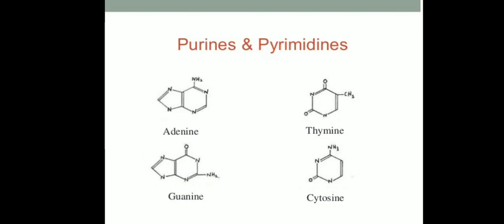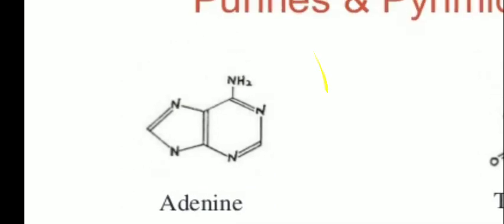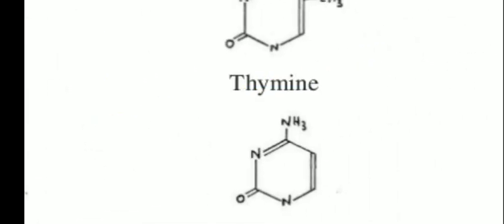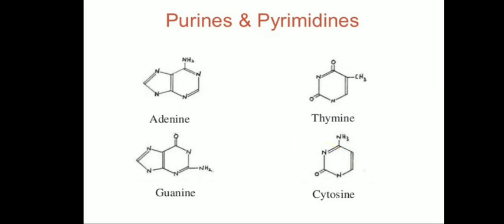Here are the structures of purines and pyrimidines. Purines include adenine and guanine in both DNA and RNA. Here is the structure of adenine and guanine. The pyrimidine group includes thymine and cytosine. These are the nitrogen bases present inside the DNA molecule.